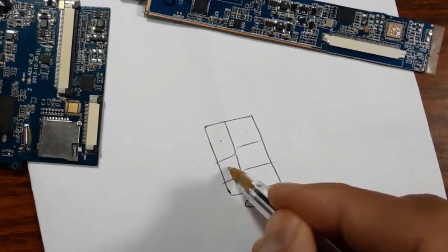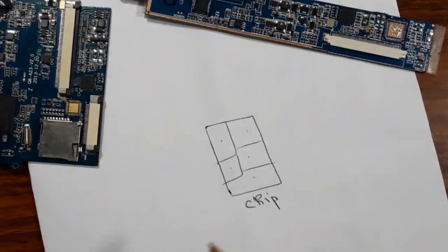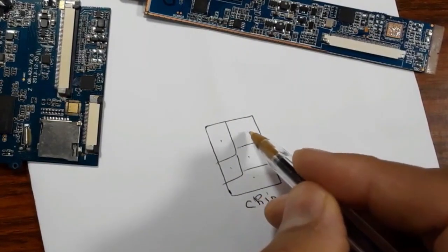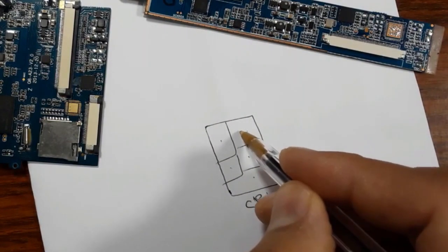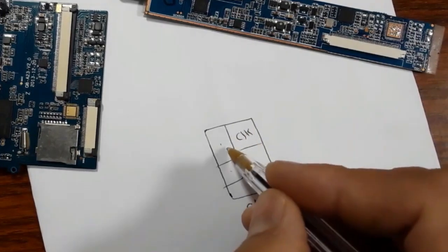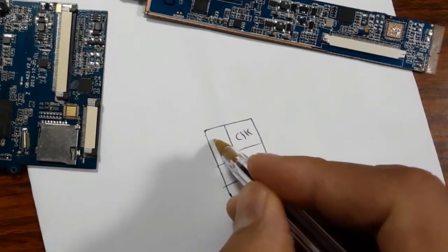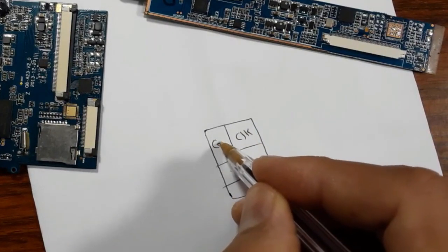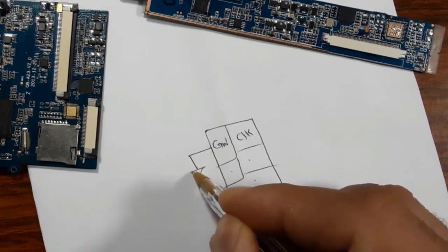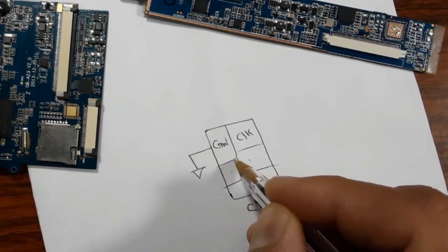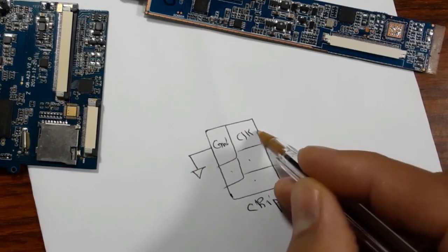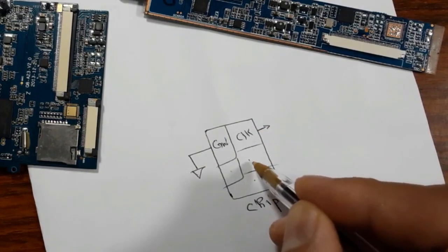All these connections are controlled. For example, you can find here the clock. You can also find the ground — this part of the chip is connected to the ground, and here is the connection for the clock.